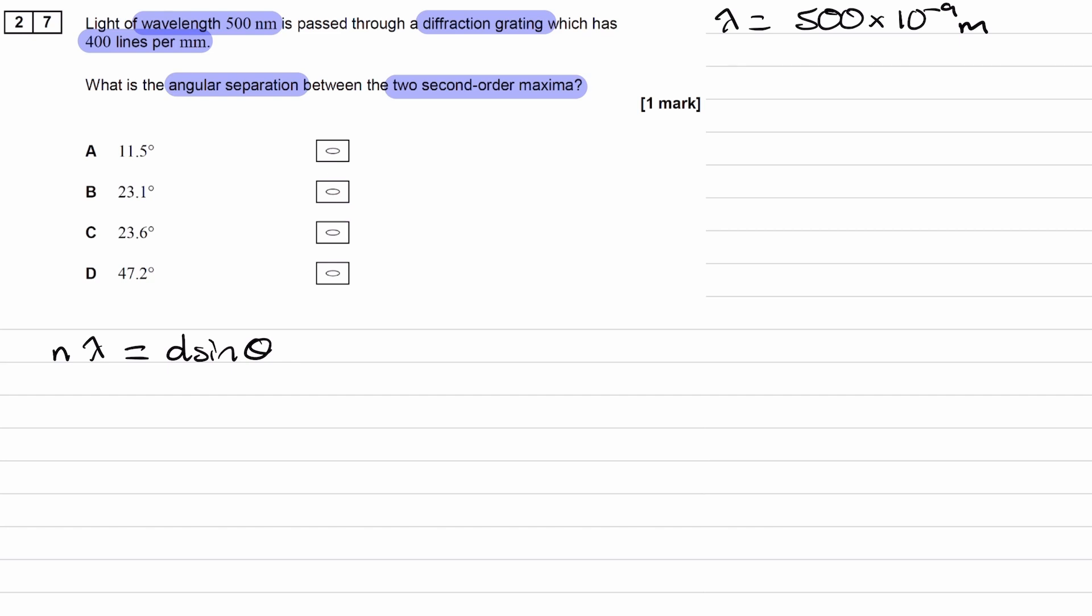We have the number of lines per millimeter, that's 400 lines per millimeter. We're trying to work out the angular separation, a value of theta between the two second order maxima, so n is 2.